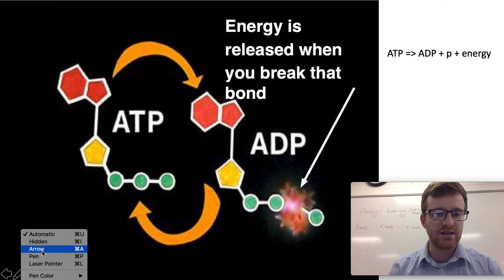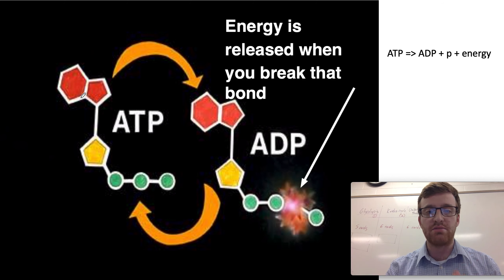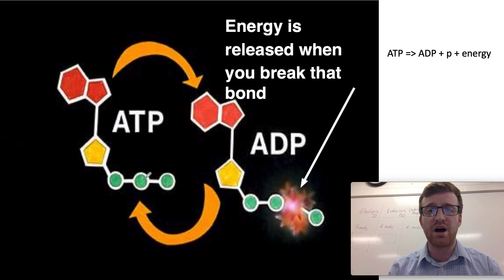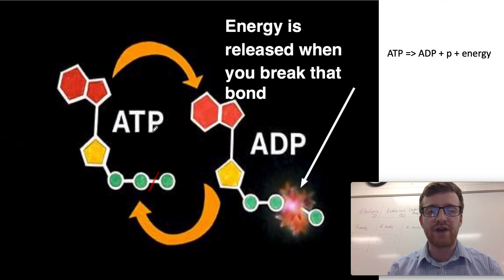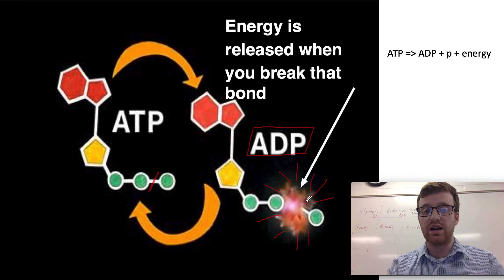So here we have the ATP-ADP cycle. ATP doesn't last long in your body, but it is transferred to where it needs to go, and then your body uses it for energy — for things like active transport, movement, or motor proteins. If your body needs energy, this last phosphate is going to break off. When you have three phosphates — because it's a triphosphate — when one breaks off, now it's called ADP: adenosine diphosphate. 'Di' means two. I like to think of this as like an explosion — there's a lot of energy released, and your body uses that energy for various things.